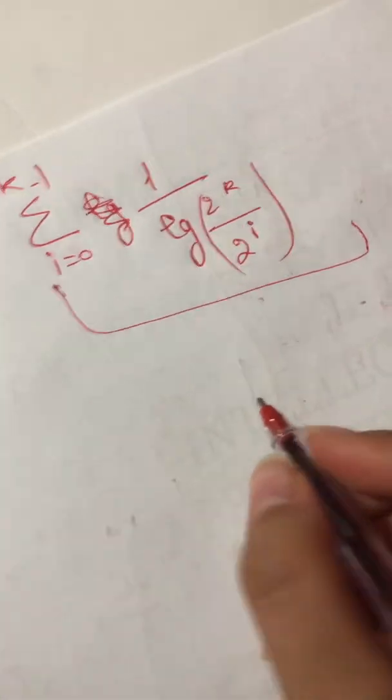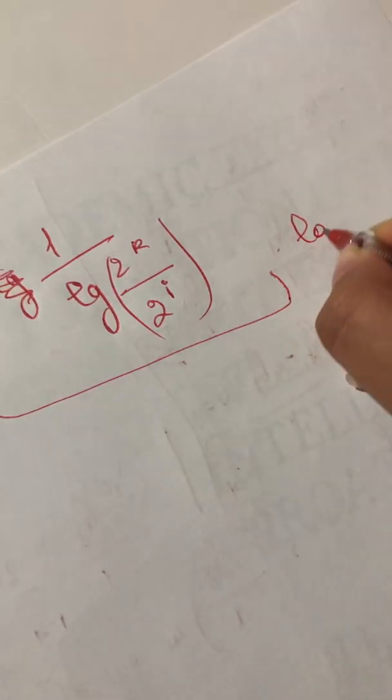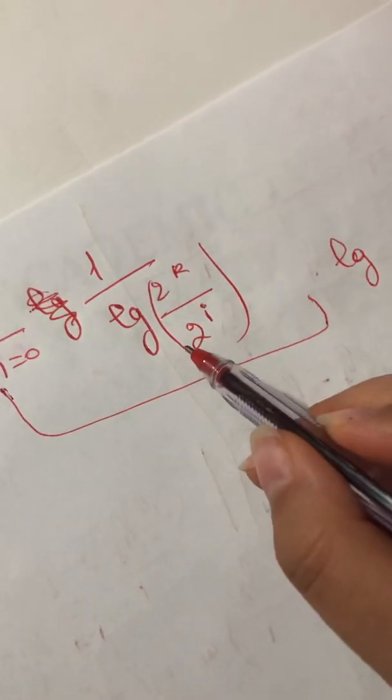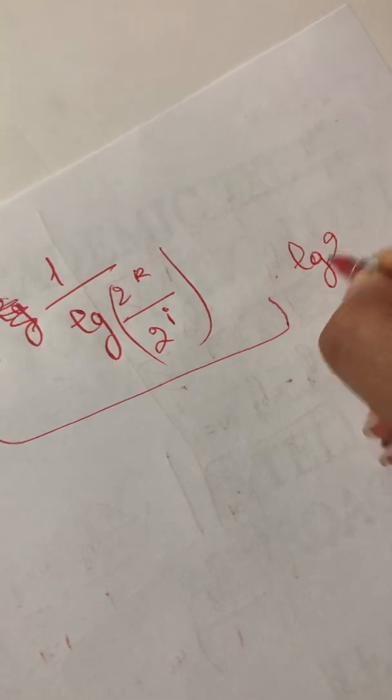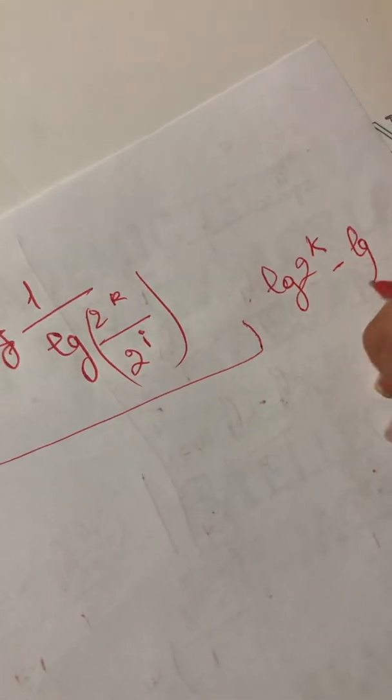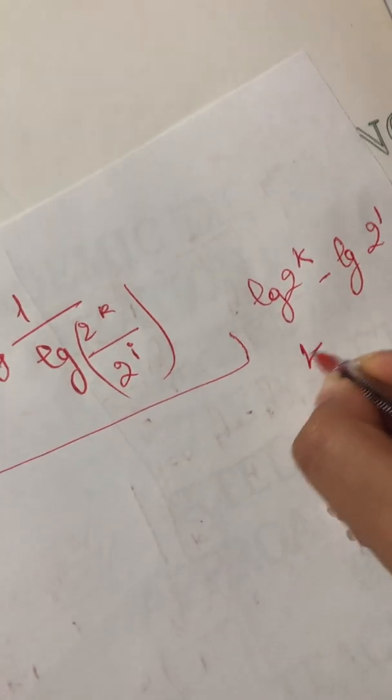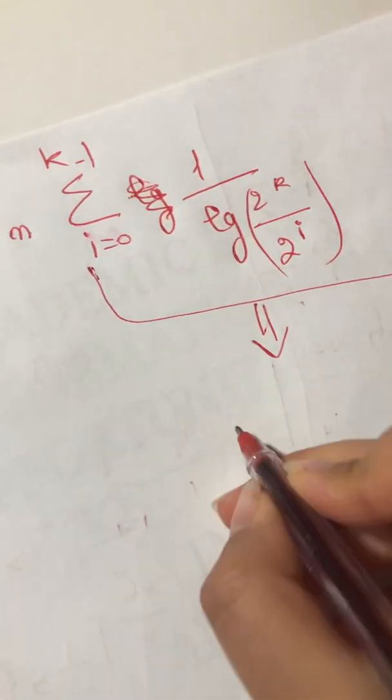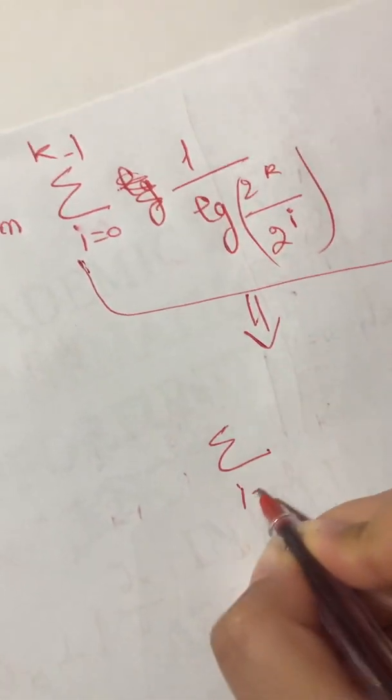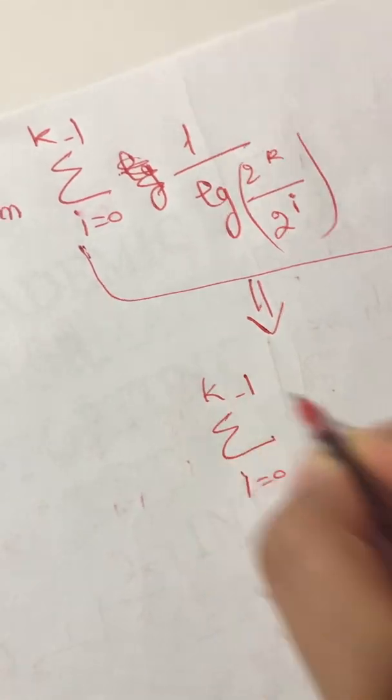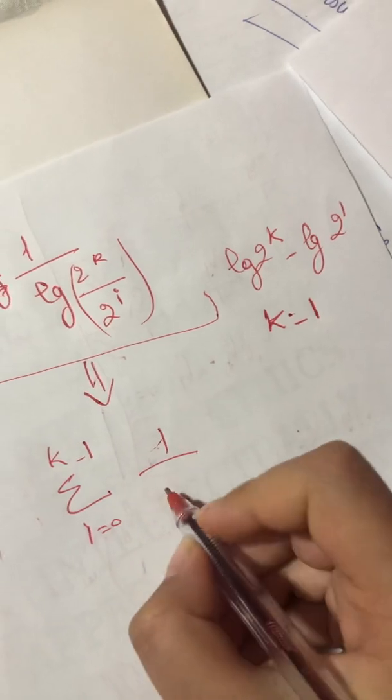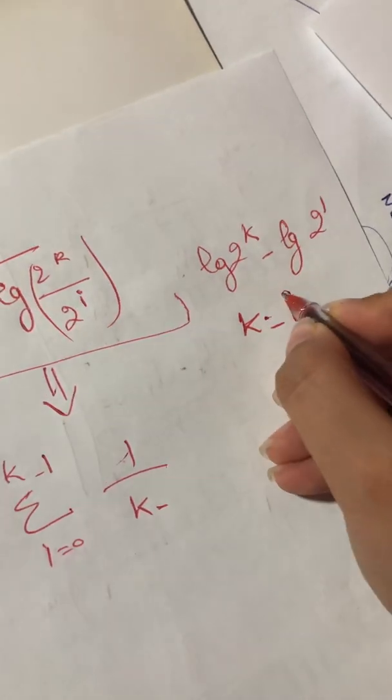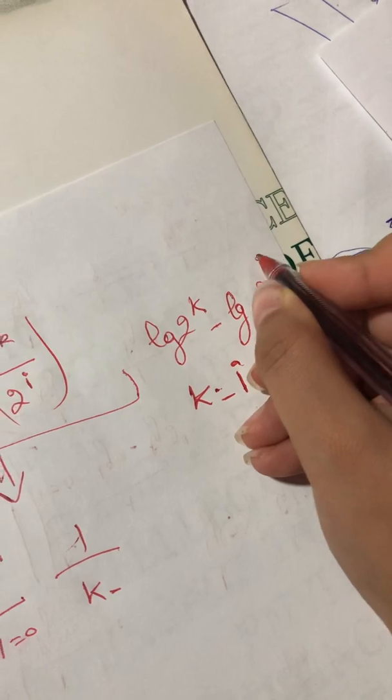So I know that log(2^k/2^i) is log 2^k minus log 2^i. So it's k minus i. I substitute it, so it's sum i equals 0 for k minus 1 for 1/(k minus i).